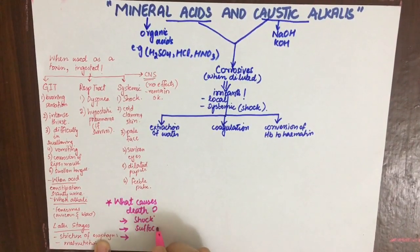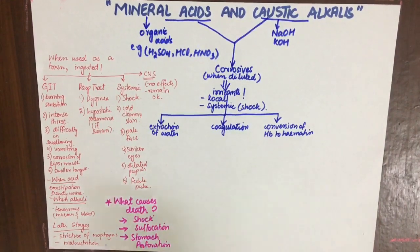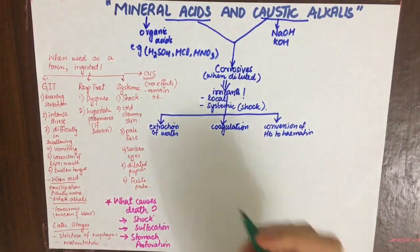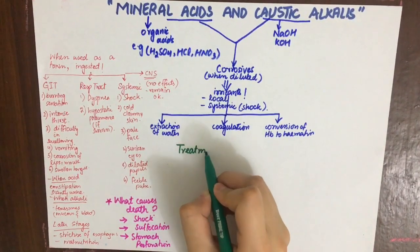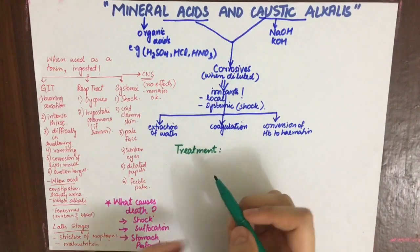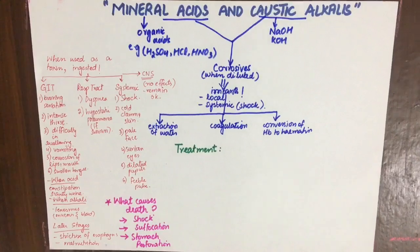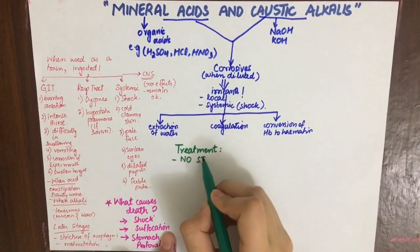Death in such poisoning is caused by: firstly, shock; secondly, suffocation due to edema of the glottis; and thirdly, perforation of the stomach, which leads to peritonitis.